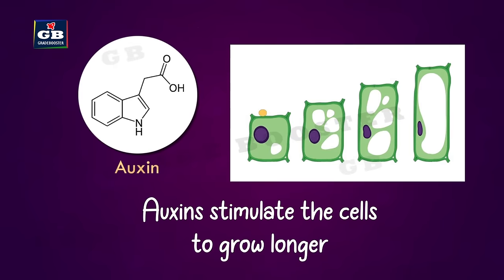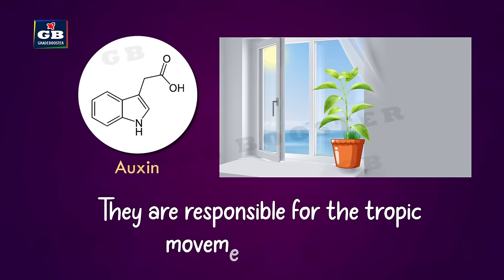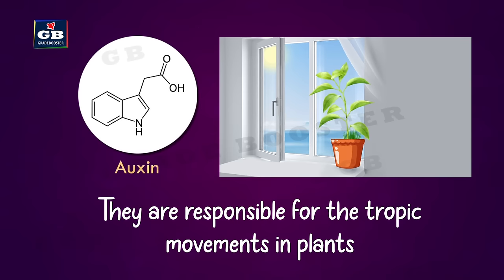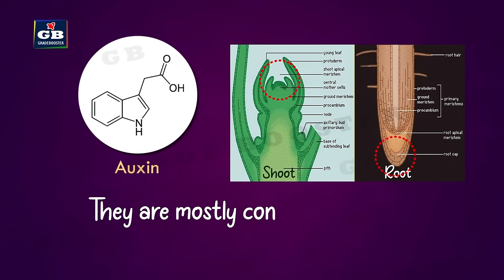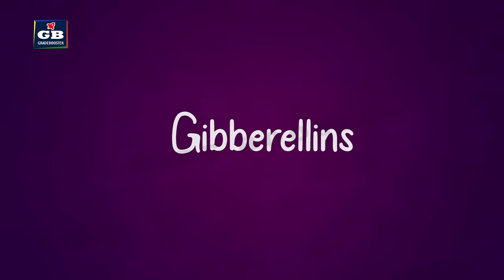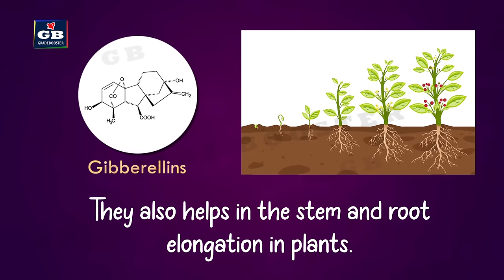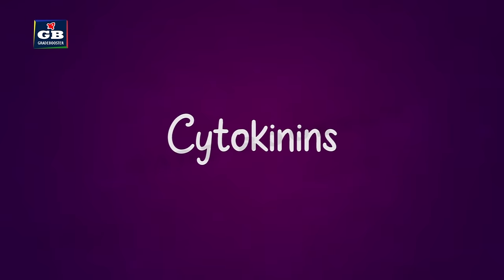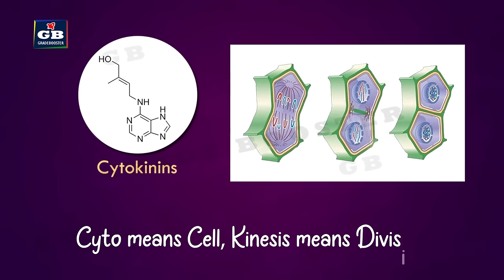The five major phytohormones are auxins, gibberellins, cytokinins, ethylene, and abscisic acid. Auxins stimulate cells to grow longer and are responsible for tropic movements in plants; they are mostly concentrated in young shoot and root tips. Gibberellins also help in stem and root elongation in plants.